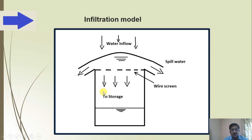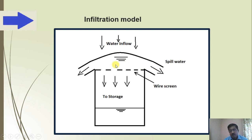A simple model is shown here to understand the concept. Consider a conduit or pipe with pores provided on it. If you pour water, not all water will enter into the pipe — some will flow along the surface and some water will enter. We call this infiltration, and that water ultimately goes to the store.